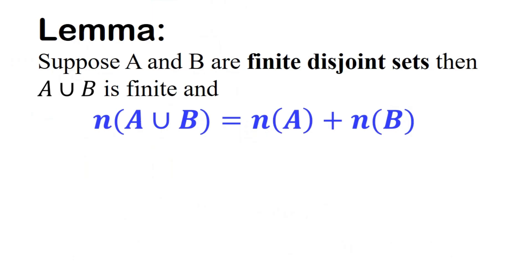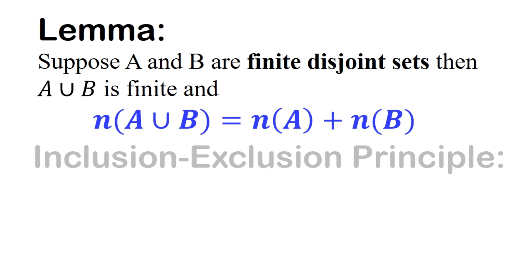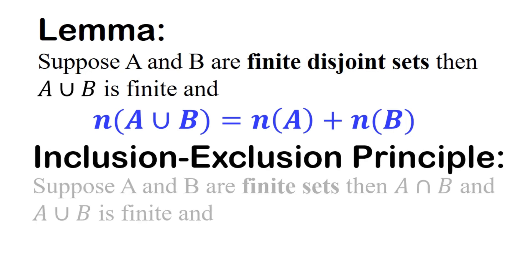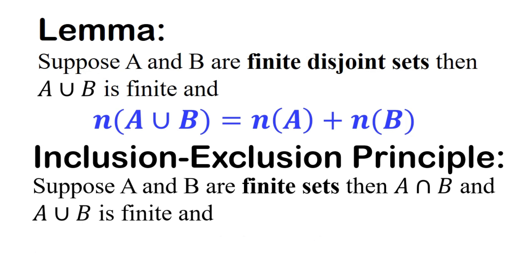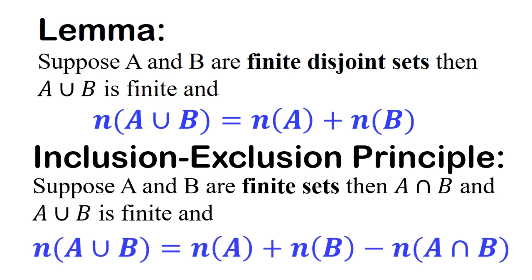Before we proceed, whenever we are talking about union, there is another important thing which is the number of elements that form the union. Here we are going to consider two facts. The first one is a lemma, while the second one is the inclusion and exclusion principle.